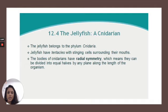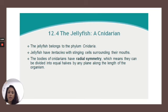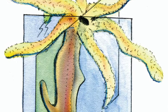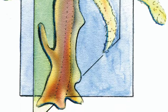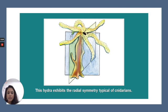The jellyfish is known as the cnidarian. It belongs to the phylum Cnidaria. Jellyfish have tentacles with stinging cells surrounding their mouths. The bodies of cnidarians have radial symmetry, which means they can be divided into equal halves by any plane along the length of the organism. The hydra exhibits the radial symmetry typical of cnidarians — you can see that this plane can cut right through any side and divide it into equal parts.